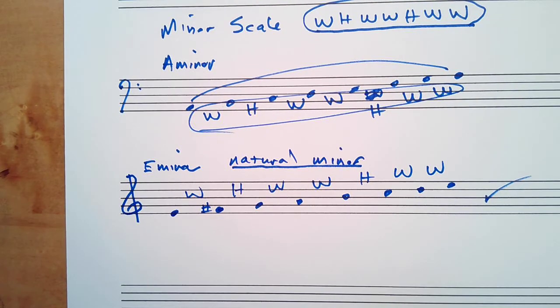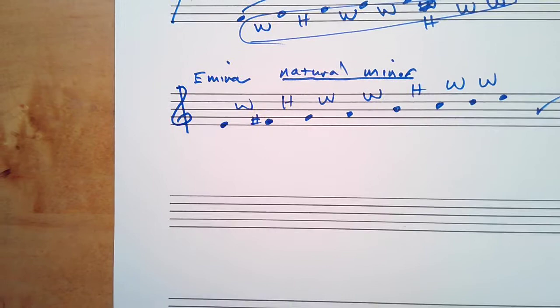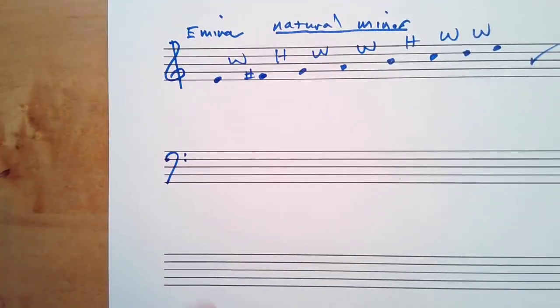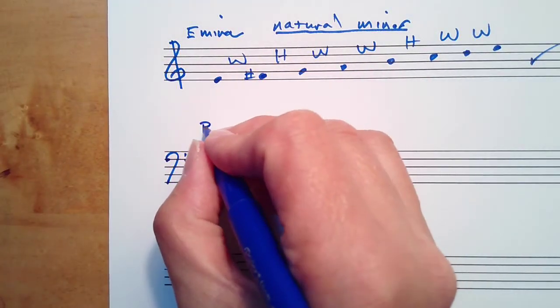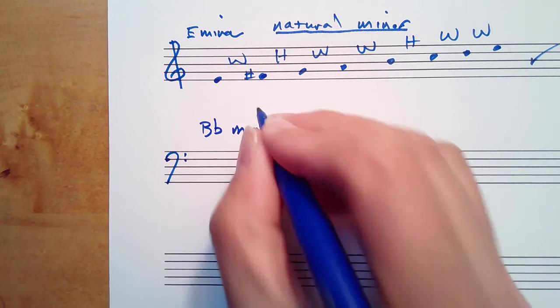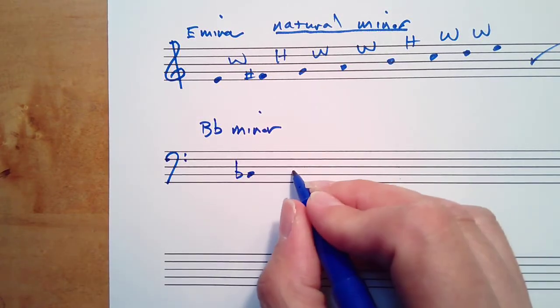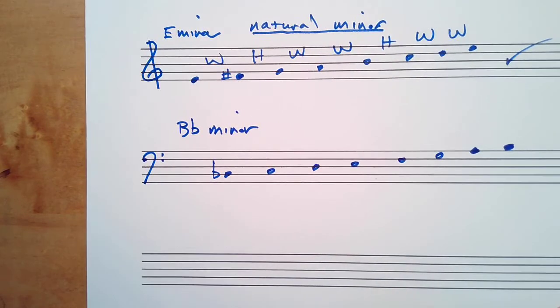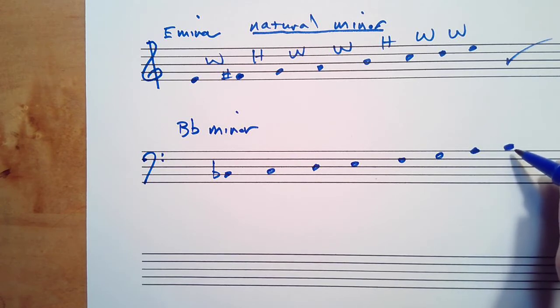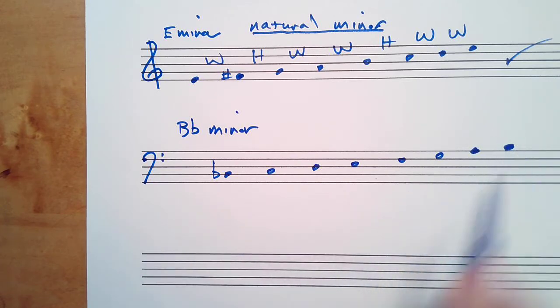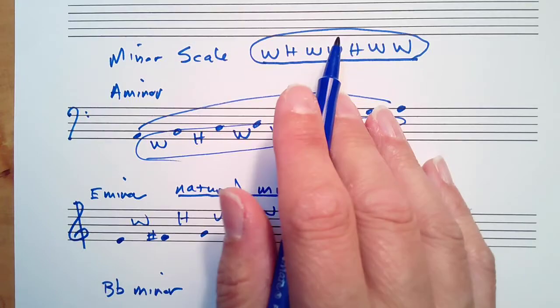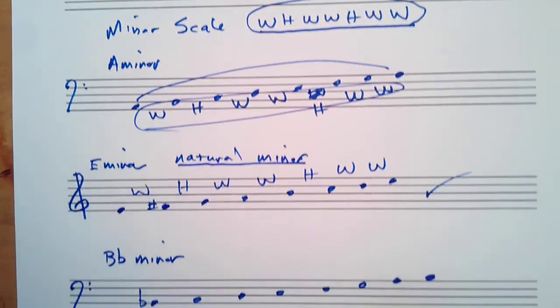I want to do one more to make sure we're good with this step-by-step process. I'll do one in the bass clef. Let's do B flat. Here's B flat. Write out some notes going up the scale. Now we know the first note is B flat, but I would recommend that you don't automatically write a B flat in here, because we want to figure out the scale and see if we arrive on B flat.